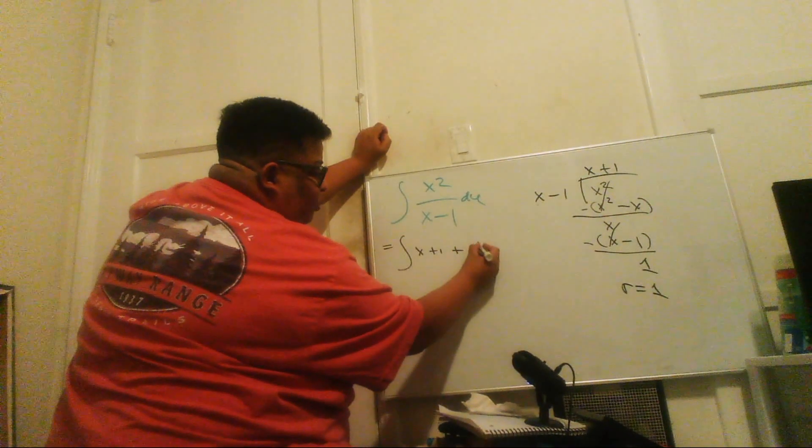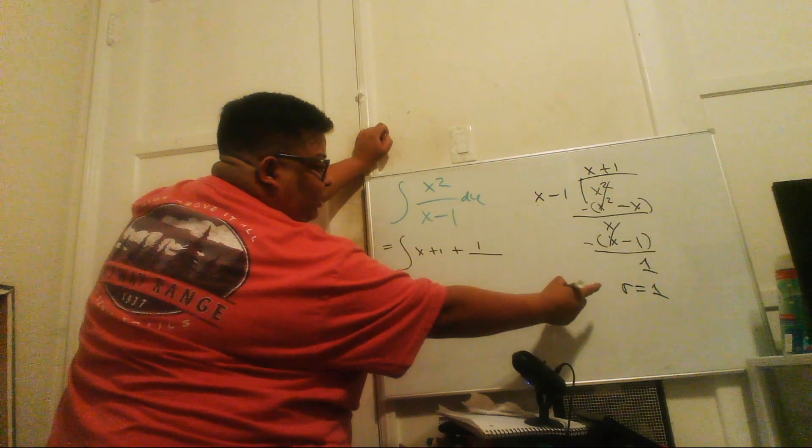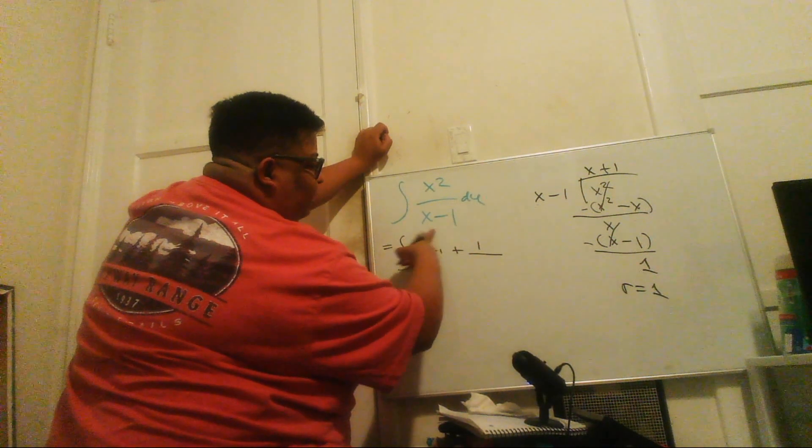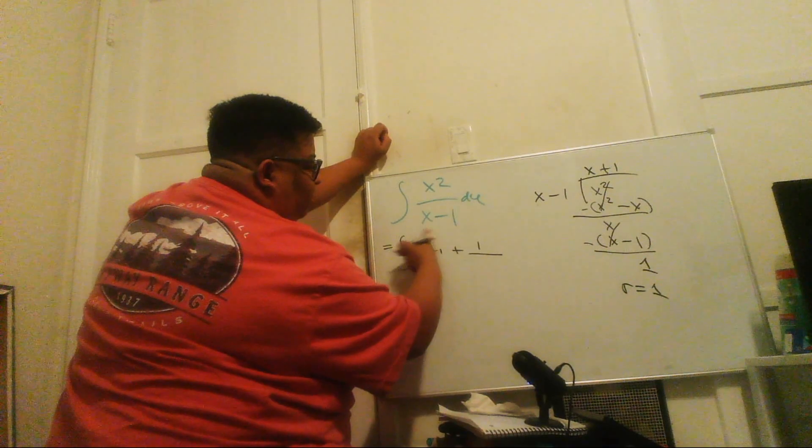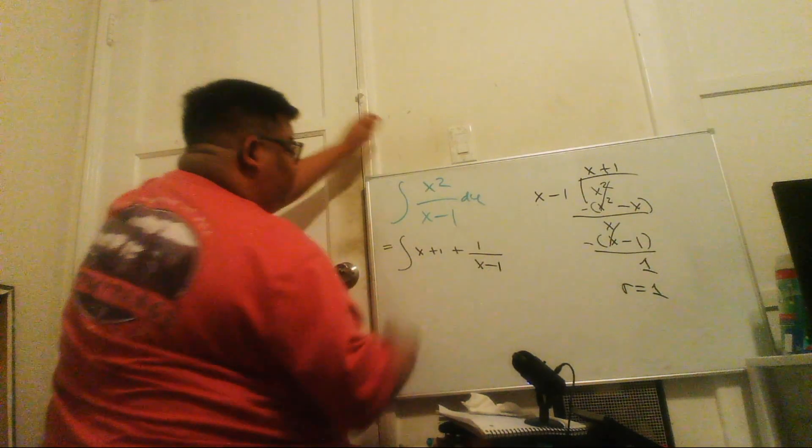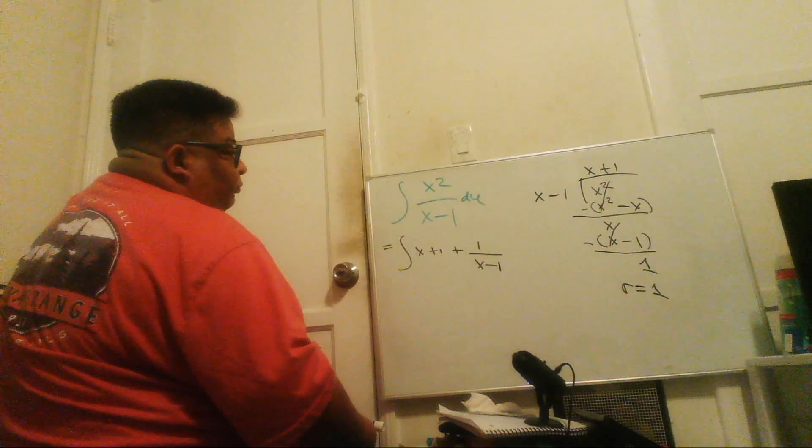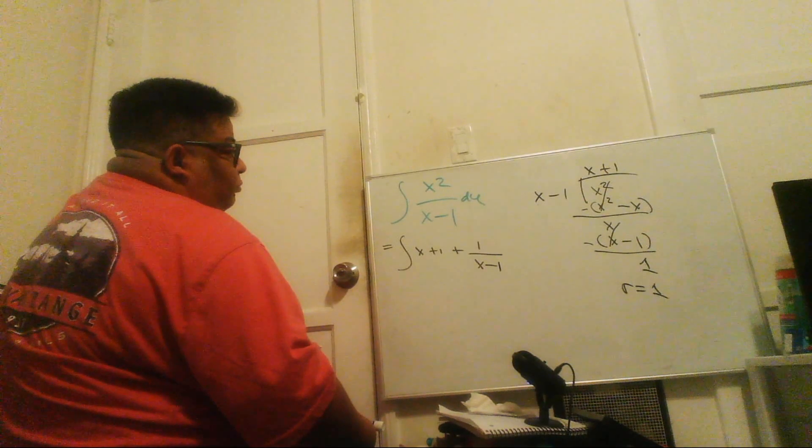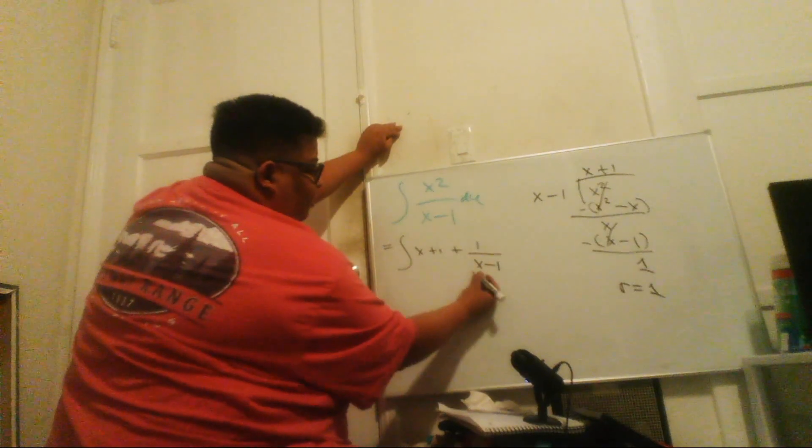So the remainder is 1 over, if you remember from algebra, the remainder is 1 over the numerator, so that will be x minus 1. So it's just the bottom, x minus 1.